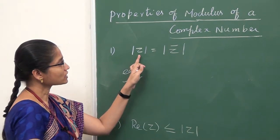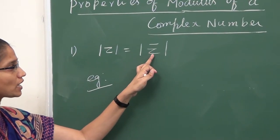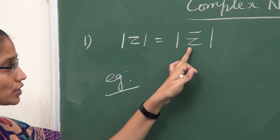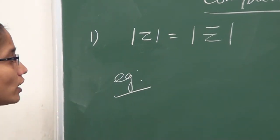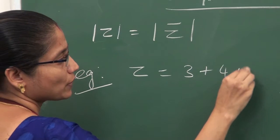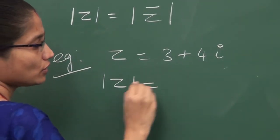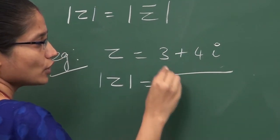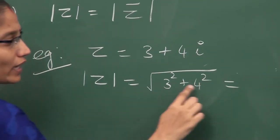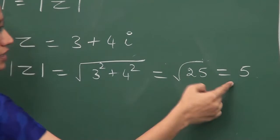The first property is: modulus of z is equal to modulus of z-bar. Z-bar is nothing but the conjugate. So the modulus of a complex number and its conjugate are both equal. Let us consider one complex number: z equals 3 plus 4i. The modulus of z, according to the modulus definition, is the square root of the square of the real part plus the square of the imaginary part — root of 9 plus 16 equals root of 25. So the modulus of this complex number is 5.